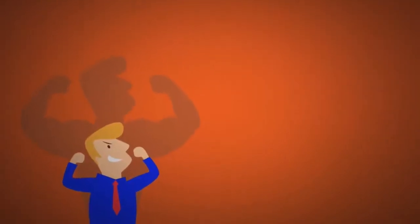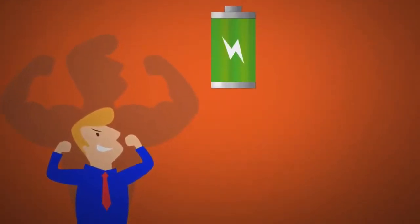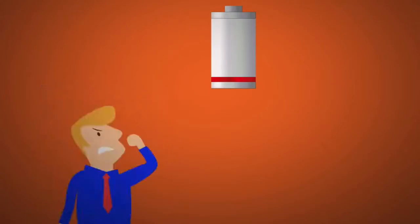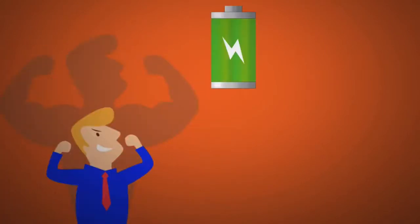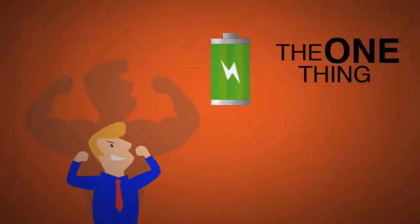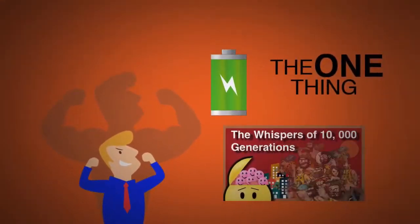Next, willpower is not on-call. It's like a battery that can run out, and once it runs out, you will revert back to your default behavior. So Gary says to use our willpower first on what matters most, which is our one thing. I talk more about why our willpower is not reliable on one of my videos.